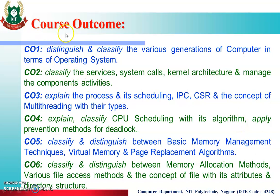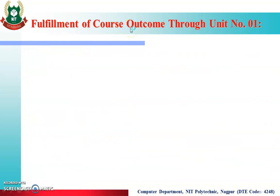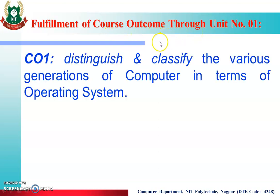These are our course outcomes. We are going to cover a total of 6 units and these are the 6 course outcomes which we are going to achieve in each unit. After completion of Unit Number 1, we will achieve CO1, which is to distinguish and classify the various generations of computers in terms of Operating System.